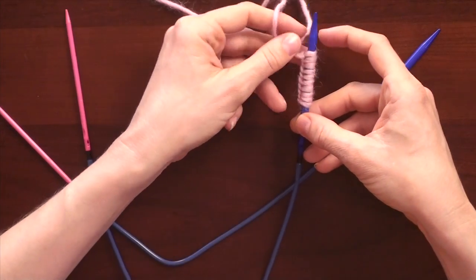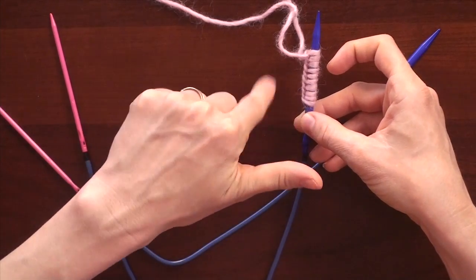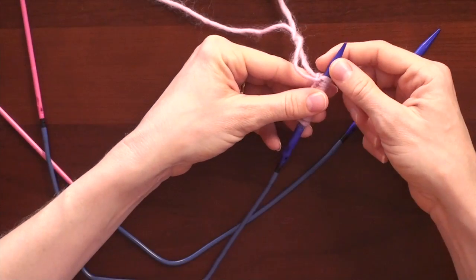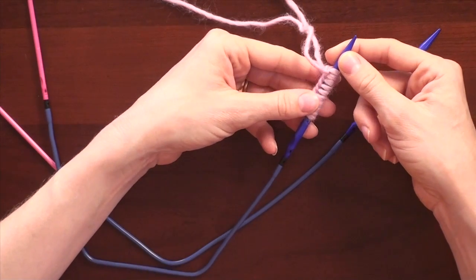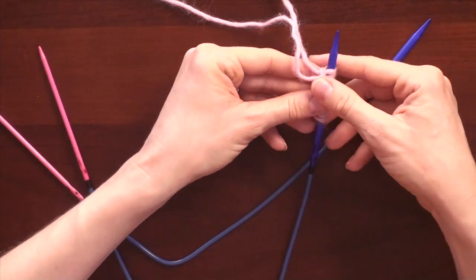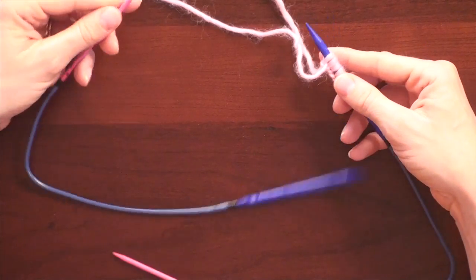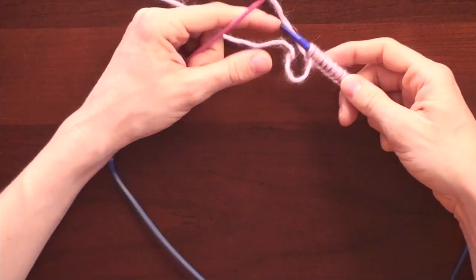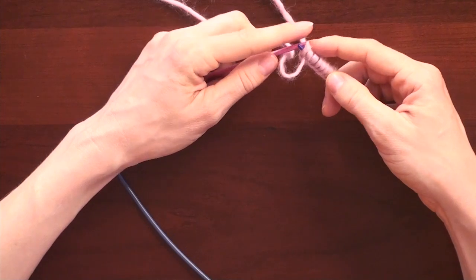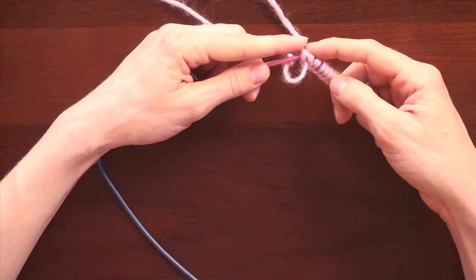So to join this in the round and begin doing a small circular knitting piece, I will transfer half of the stitches onto this other needle. I want to use my smaller tip in this case on the other needle just to transfer them over.